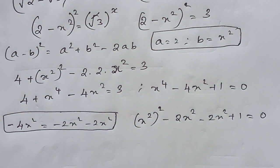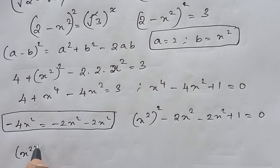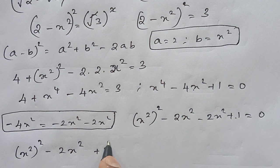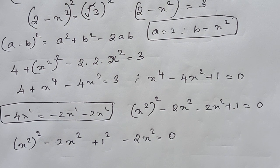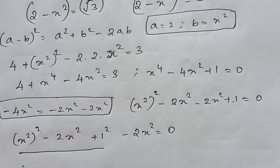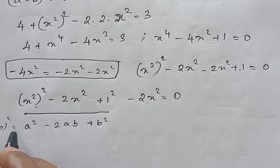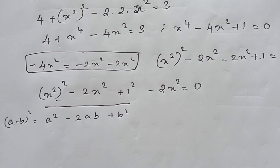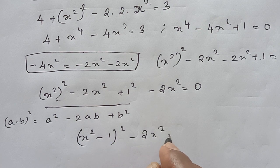I am rewriting this to simplify: x squared the whole squared minus 2x squared, and the plus 1 I write as 1 squared, minus 2 times x squared times x squared equals 0. This is of the form a squared minus 2ab plus b squared, which is nothing but (a minus b) squared. So this becomes (x squared minus 1) squared minus 2x squared equals 0.